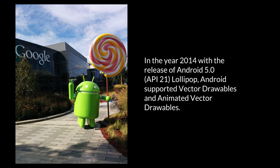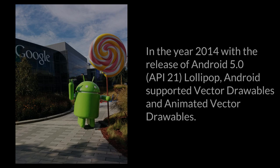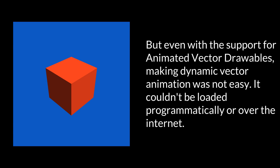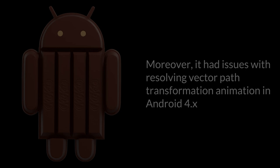In the year 2014, with the release of Android 5.0, API 21, Lollipop, Android supported vector drawables and animated vector drawables. But even with the support for animated vector drawables, making dynamic vector animation was not easy. It couldn't be loaded programmatically or over the internet. Moreover, it had issues with resolving vector path transformation animation in Android 4.x.